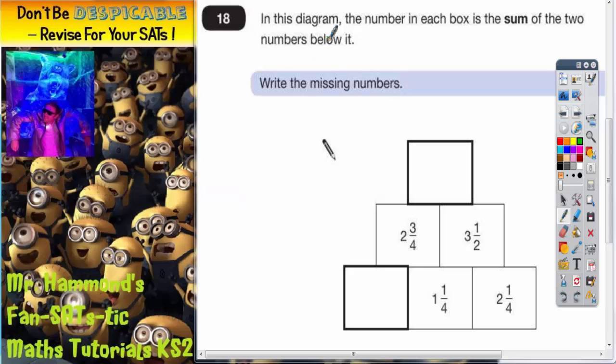Question 18. In this diagram the number in each box is the sum of the two numbers below it. Write in the missing numbers.